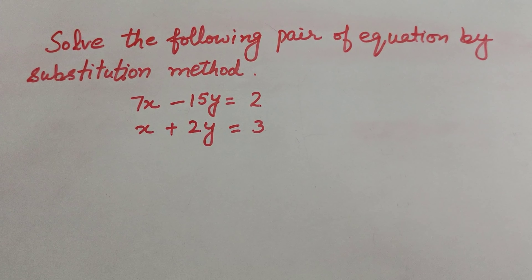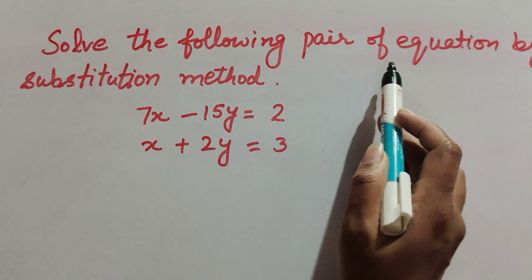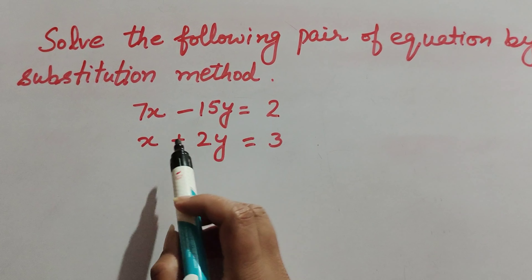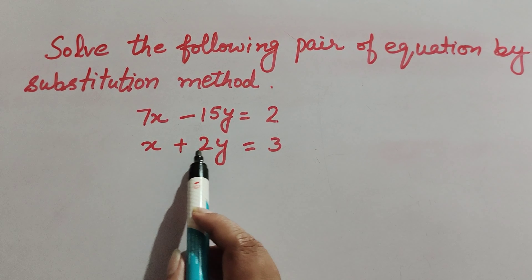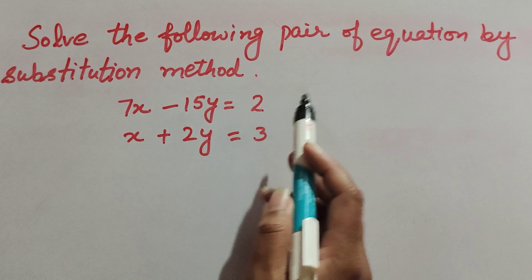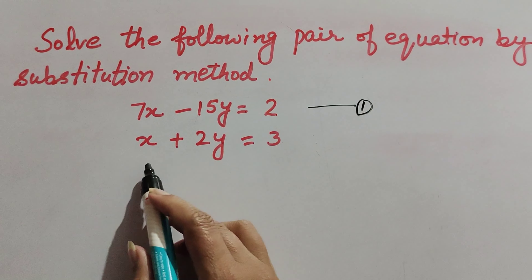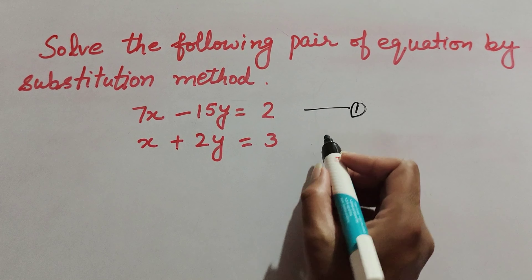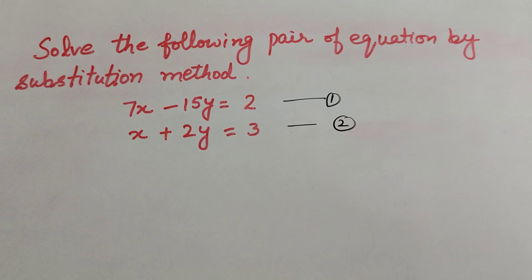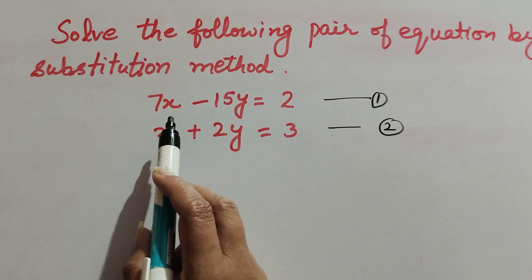Hello friends, welcome to my channel. In this video we solve the pair of equations by substitution method. Two linear equations are given: 7x - 15y = 2, we mark it as equation number 1, and x + 2y = 3, we mark it as equation number 2.